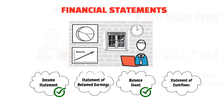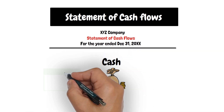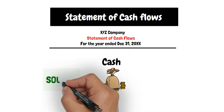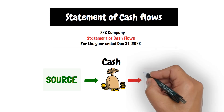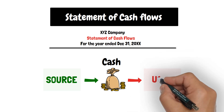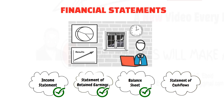The fourth statement of the financial statements is the statement of cash flows, and this statement focuses on the cash of the business. It shows from where the cash was obtained and where it was spent during the reporting period. We will discuss that statement in a separate video in this course.